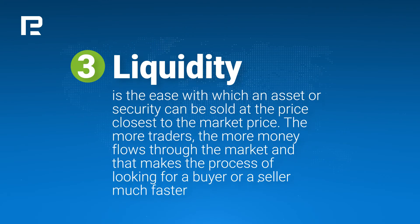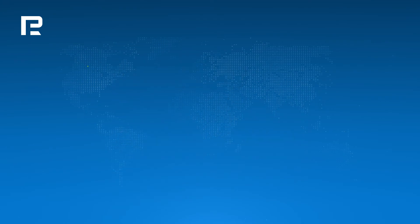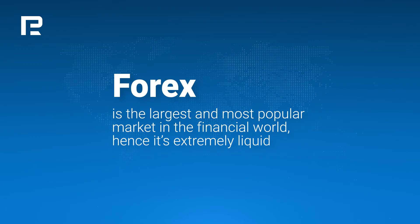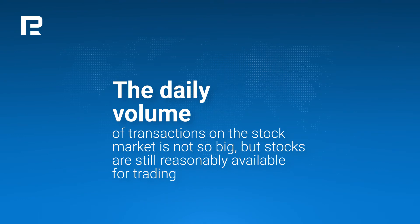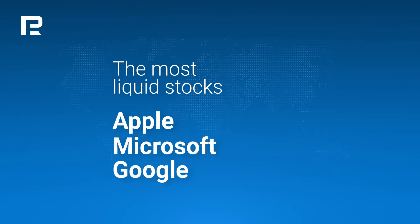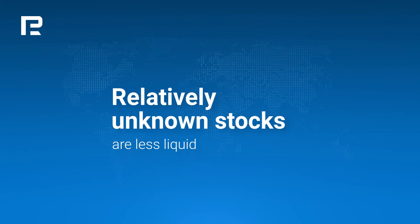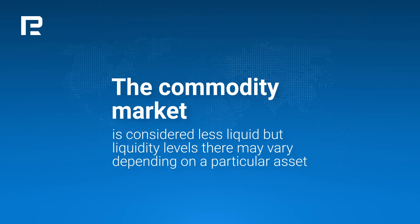Liquidity is the ease with which an asset or security can be sold at the price closest to the market price. The more traders, the more money flows through the market, making the process of finding a buyer or seller much faster. Forex is the largest and most popular market in the financial world, hence it's extremely liquid. The daily volume of transactions on the stock market is not as large, but stocks are still reasonably available for trading. Shares of big companies such as Apple, Microsoft, and Google are called blue chips and are highly liquid. However, when an investor chooses to acquire no-name stocks, liquidity plunges.